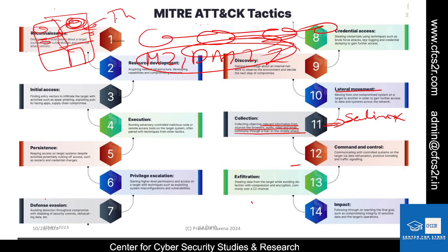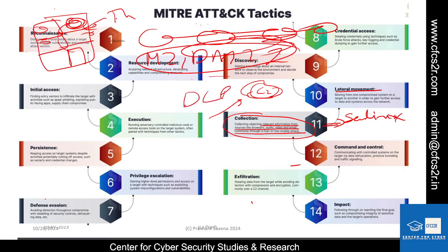When these things are happening, there are a lot of IOAs — indicators of attack. Collection techniques often involve legitimate OS and application features, making detection challenging. Security teams can monitor for suspicious data staging behavior like file compression, because compression is important when the attacker is going to send data to the C2. To protect against this, you can use DLP tools — data loss prevention tools — network segmentation, and strong access controls.